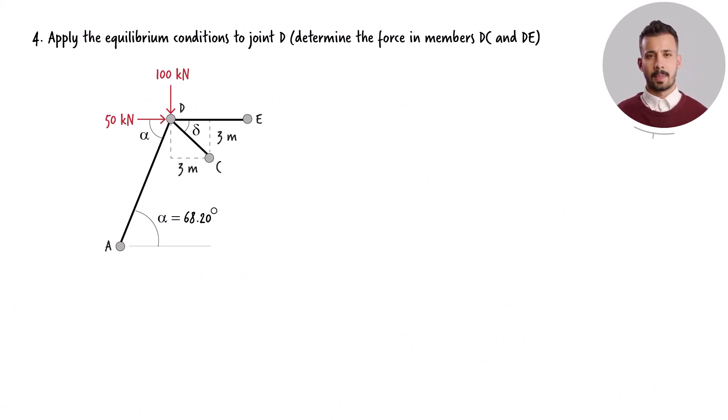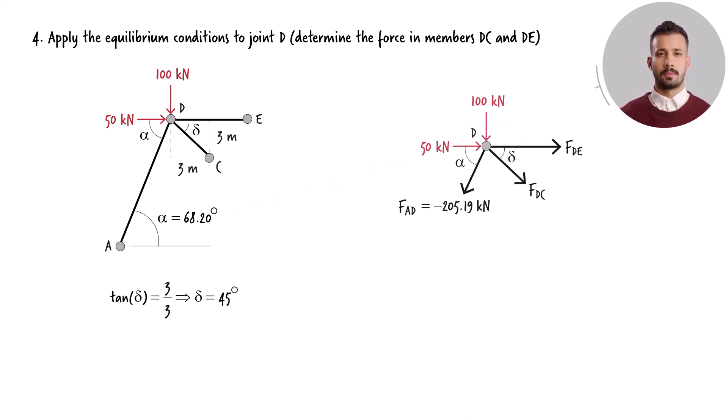Joint D connects three members. The angle between member AD and the horizontal axis has already been established. Member CD forms a 45-degree angle with the horizontal axis. Three forces are involved in the equilibrium equations for this particular joint. Since we've already determined the force in member AD,